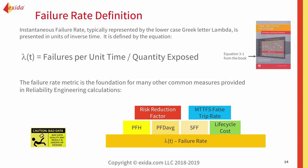The failure rate is the foundation of many different metrics, including your PFH, your PFD average, and your SFF. All the metrics that you see in the functional safety standards live on a foundation of failure rate data. Therefore, realistic failure rate data is again essential, including trip rates, risk reduction factors, and lifecycle cost.